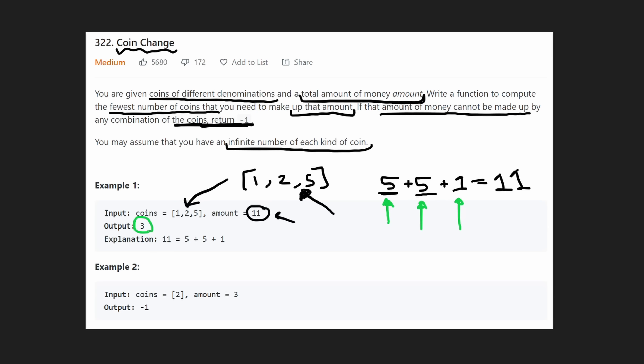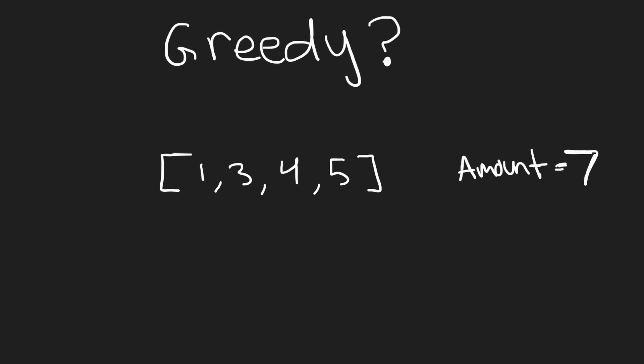In the second example, we have a coin of value two but we want to sum to three. We can try two plus two, but that's four — we went over. So there's no way to possibly sum to three, and we return negative one.